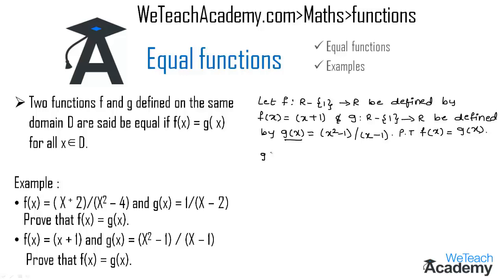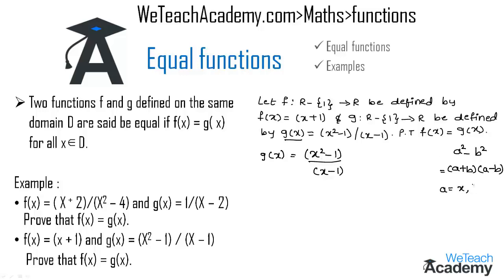Consider g(x) = (x² - 1) / (x - 1). We observe that x² - 1 is in the form a² - b² = (a + b)(a - b). Comparing, we get a = x and b = 1. So we write x² - 1 as (x + 1)(x - 1), giving g(x) = (x + 1)(x - 1) / (x - 1).